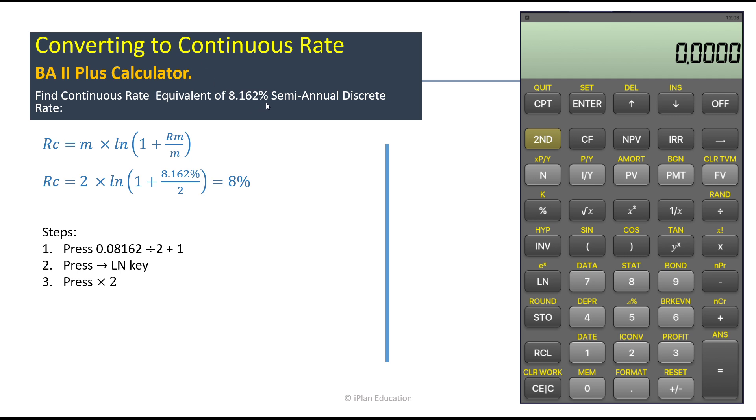Which means the interest amount of 8.162% equals the continuous compounded rate. So continuous compounded rate would be a little lower than the discrete rate because continuous compounding has the highest frequency.